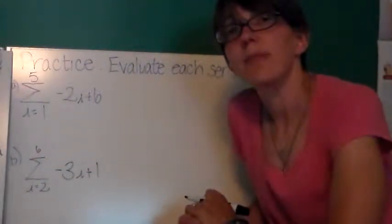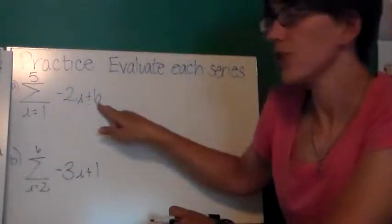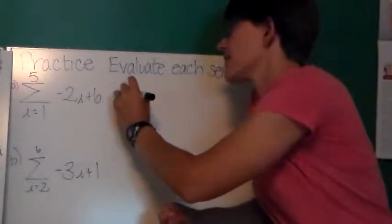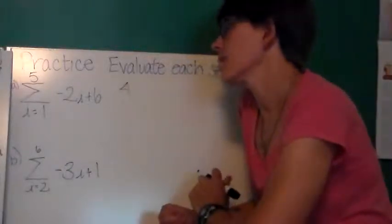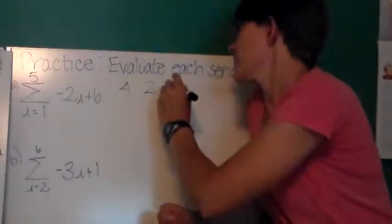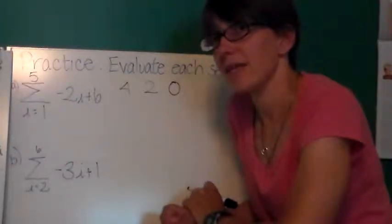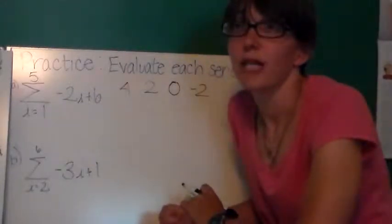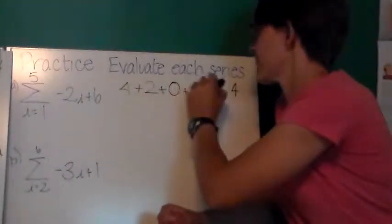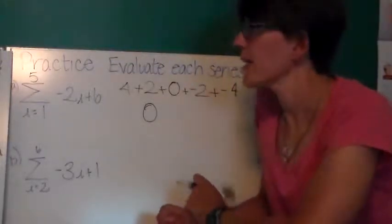So let's practice with a couple of examples. Here, I have the sum as i goes from 1 to 5 of negative 2i plus 6. So we'll find my first 5 terms. Negative 2 times 1 is negative 2 plus 6 is 4. Negative 2 times 2 is negative 4 plus 6 is 2. Negative 2 times 3 is negative 6 and plus 6 is 0. Negative 2 times 4 is negative 8 plus 6 is negative 2. And negative 2 times 5 is negative 10 plus 6 is negative 4. So there's my terms. I'm going to add them all together. I notice I have some opposites here. So the value of this series is 0.